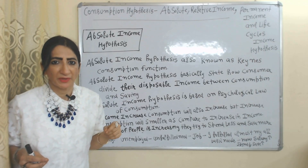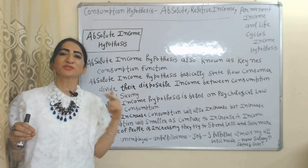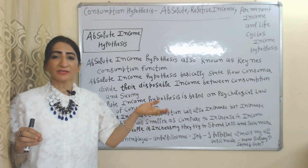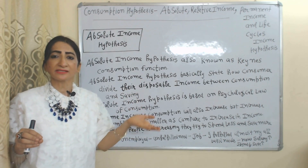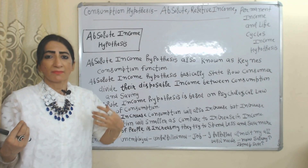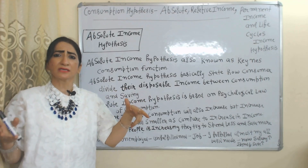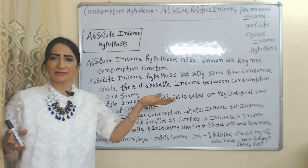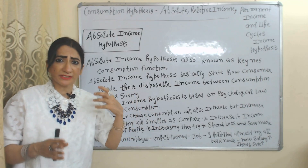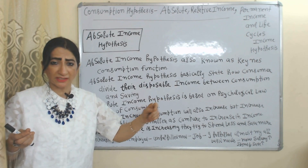Absolute income hypothesis is based on the psychological law of consumption. According to this law, as income increases, consumption will also increase, but the increase in consumption is smaller compared to the increase in income. For example, when I was unemployed I had many unfulfilled needs, but once I got a job I fulfilled my basic needs — purchased a car, home, mobile, and laptop. Now as my salary increases, I will save more and spend less because my basic needs are already fulfilled.